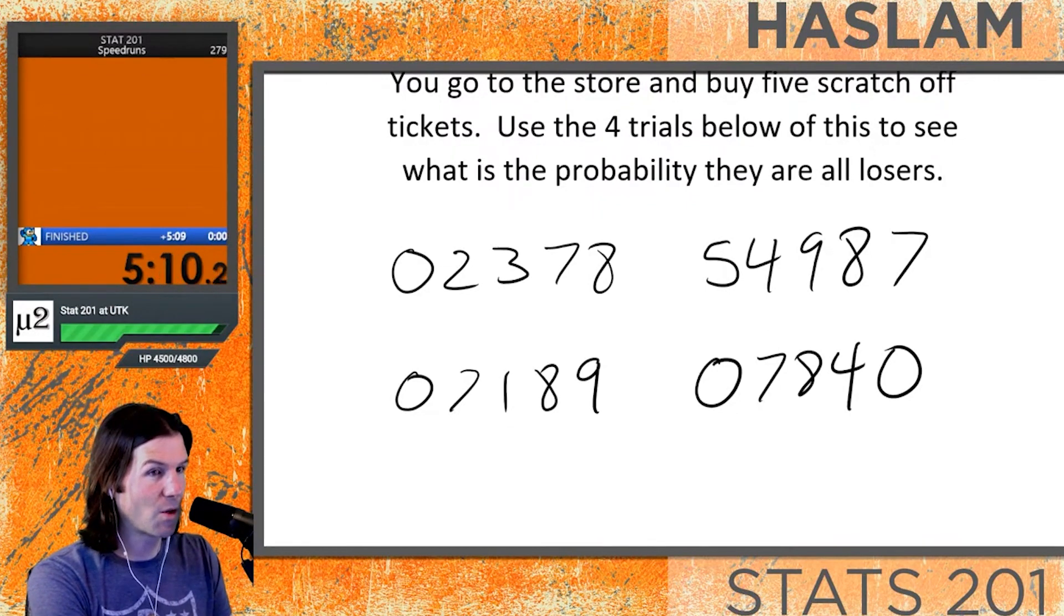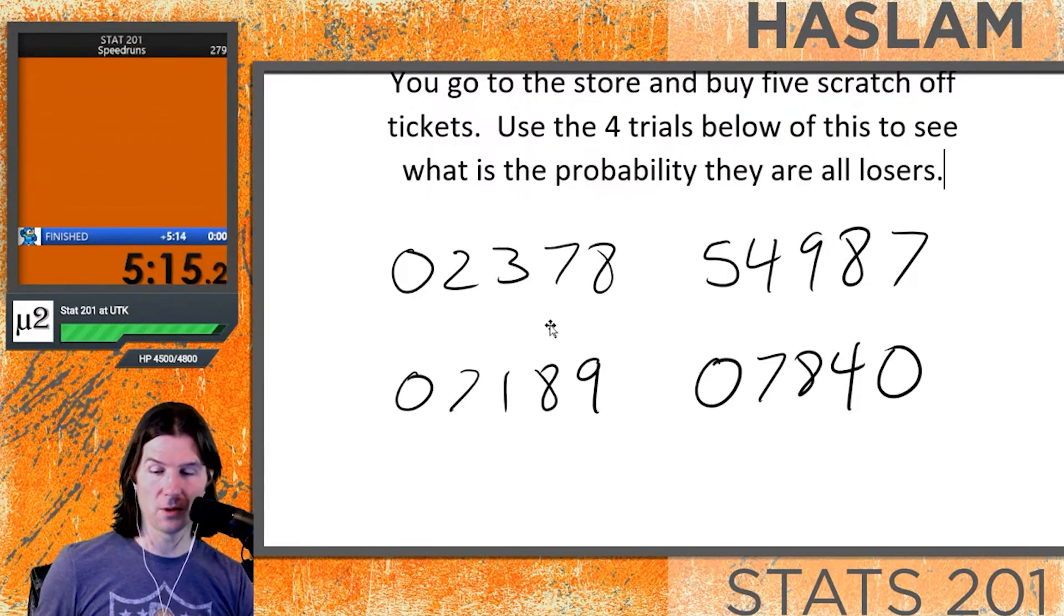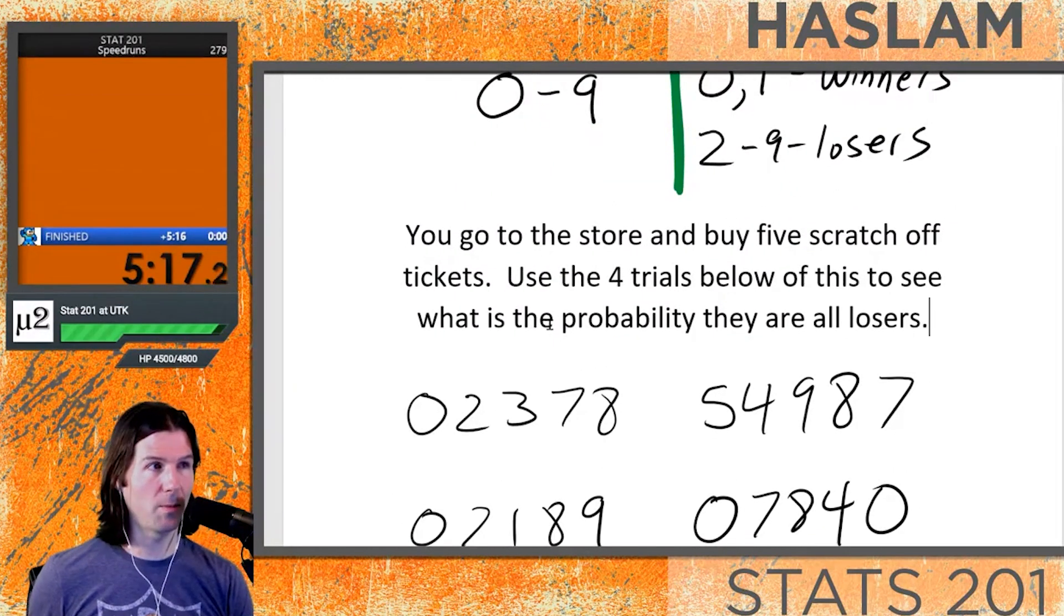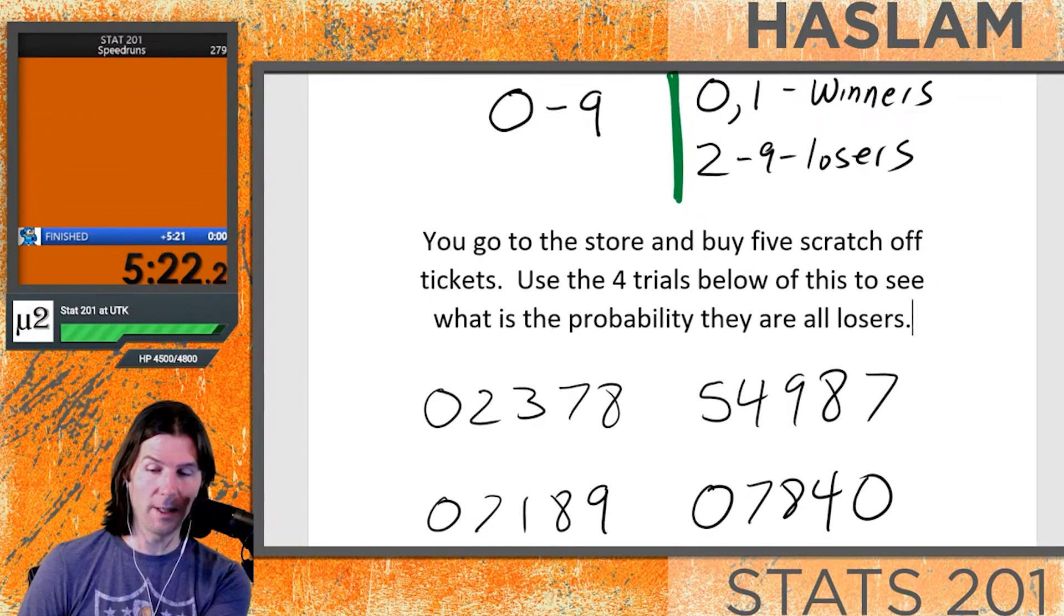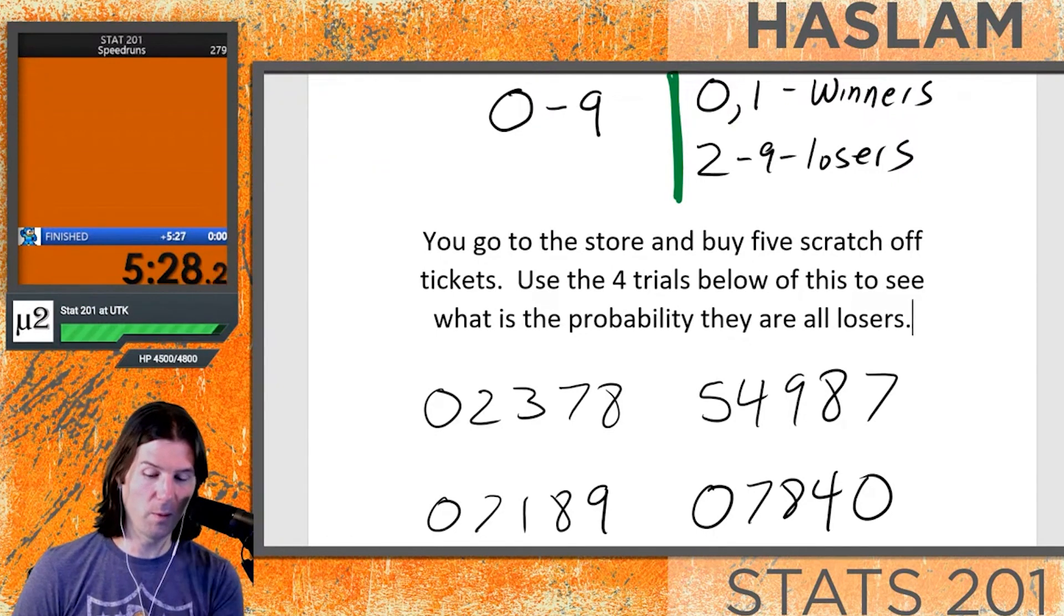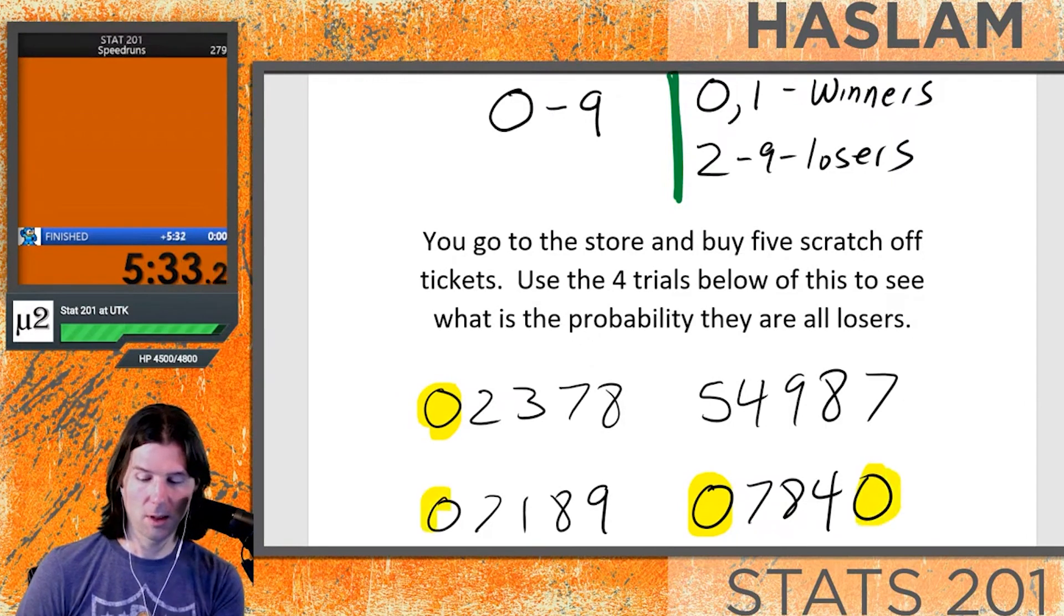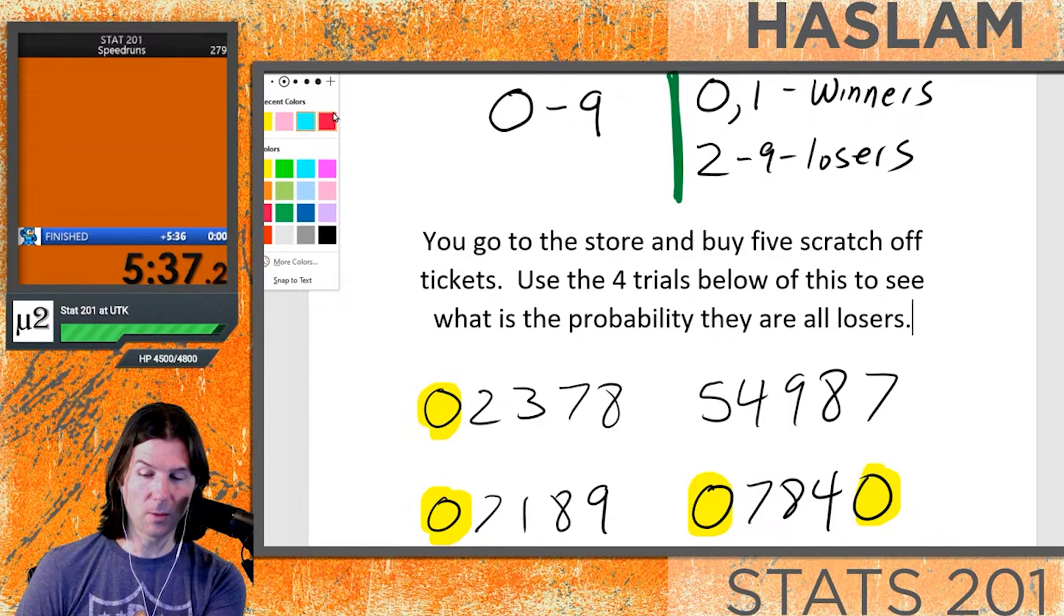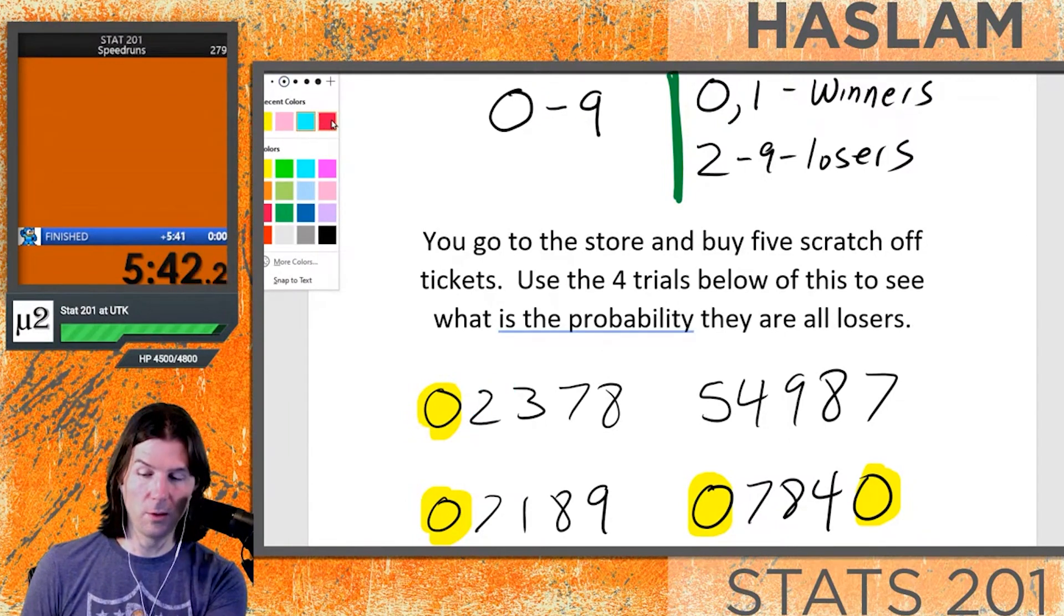We would need a real random number generation for this to be a real problem, but we'll assume that these are random numbers. We immediately want to start converting these into winners and losers. Our table is going to help us out on knowing whether or not things are winners or losers. We have a winner here, winner here, winner here, and winner here. The important thing to know is we're not concerned with how many winners there are, we're just concerned with were they all losers.